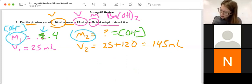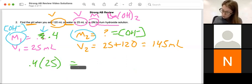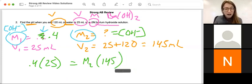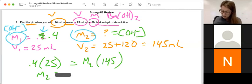So doing the actual math on this now, M1V1 equals M2V2. Make sure you used 145 for V2, because we're looking at the total volume after dilution. In my calculator, I type 0.4 times 25 divided by 145. I get an M2 of 0.069.